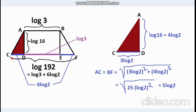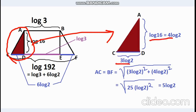Now, if we consider the triangle, where CD equals 3 log 2 and AD equals 4 log 2, then by the Pythagorean theorem, we get AC equals BF equals 5 log 2.